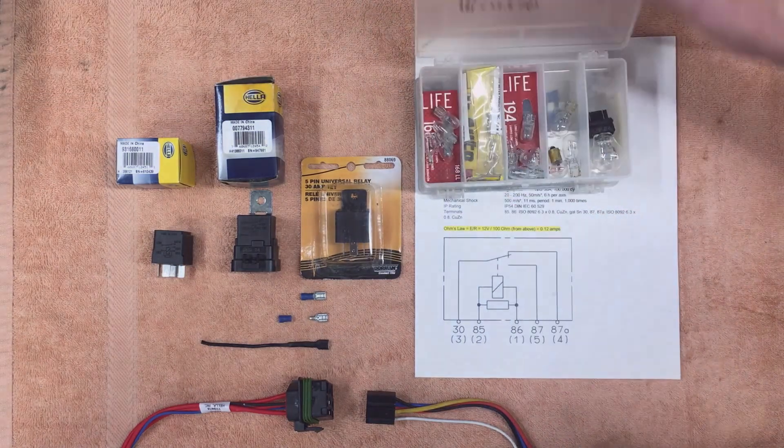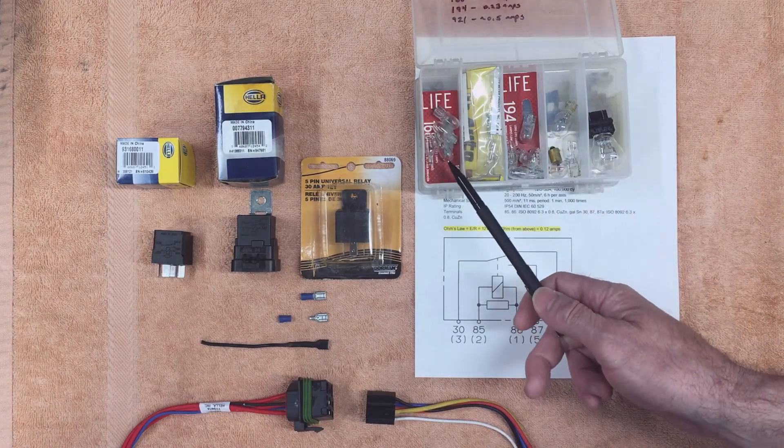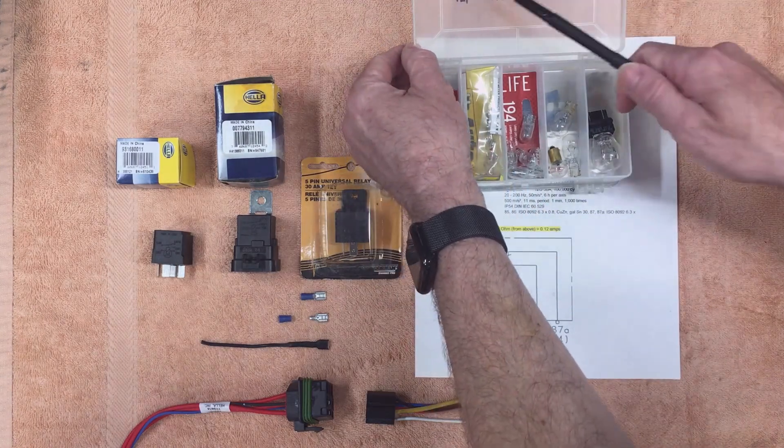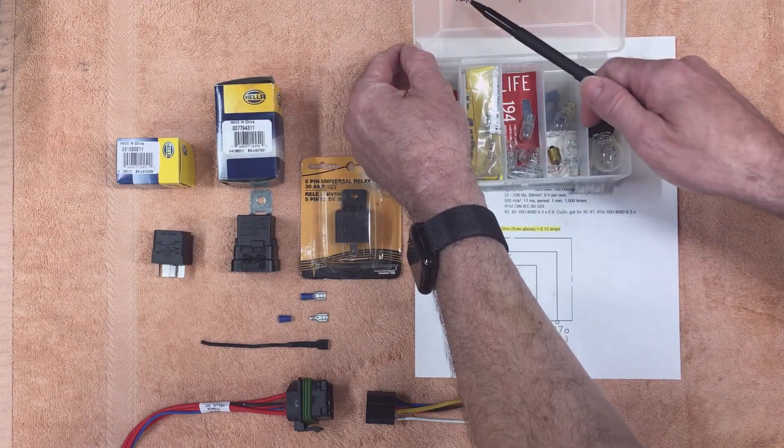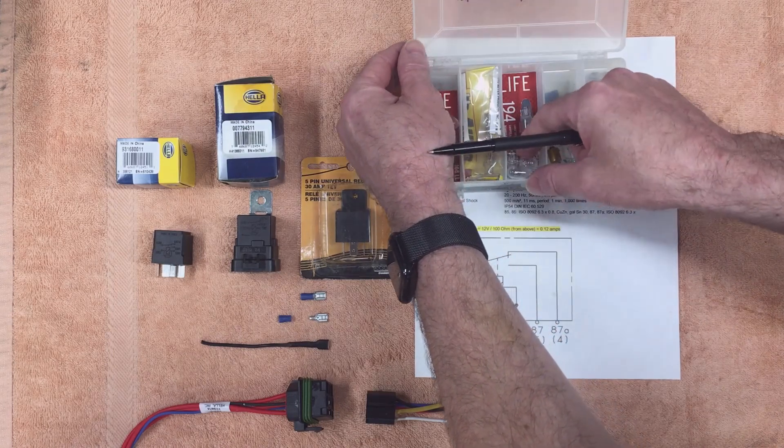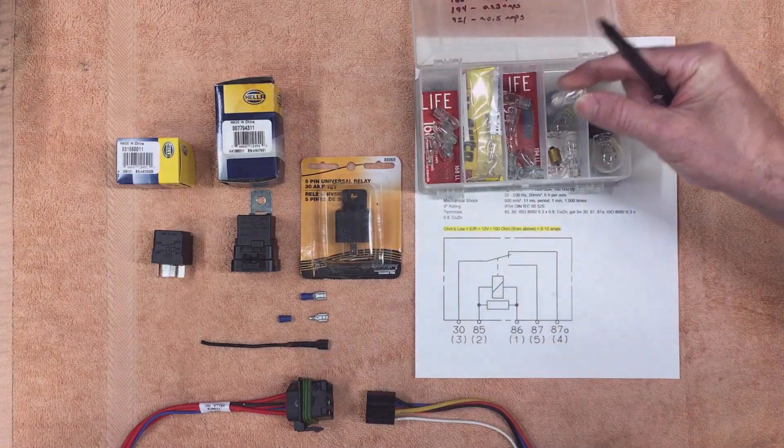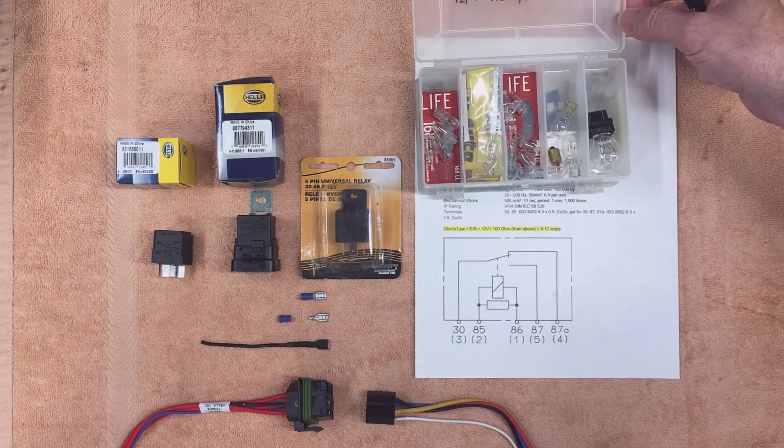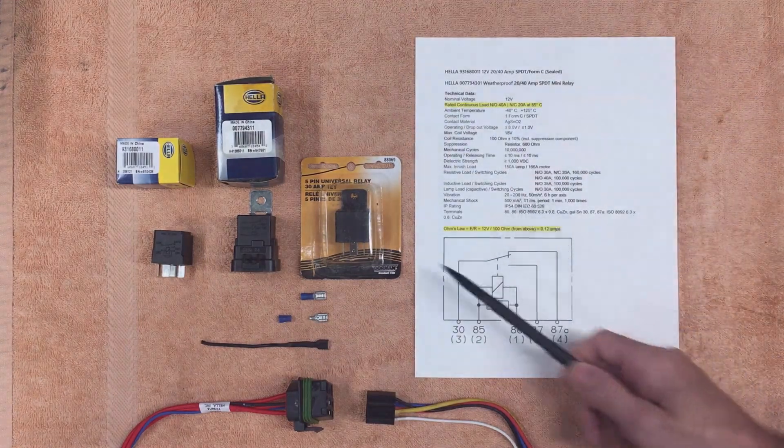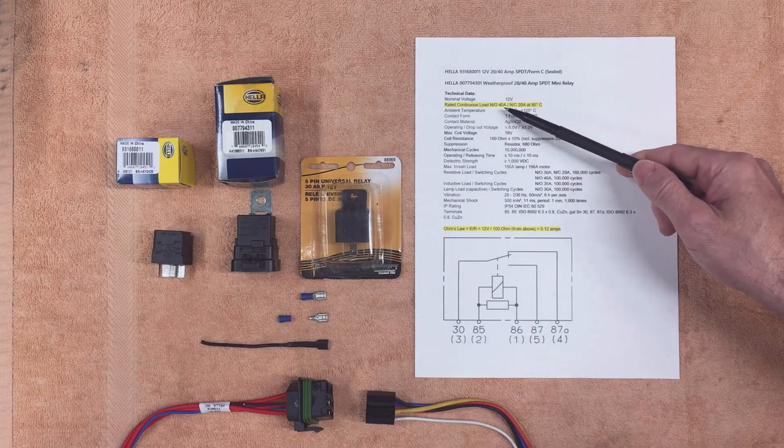Now by comparison, I'm going to pull out my little spare bulbs box. A 168 bulb requires 0.3 amps and a 194 lamp, these little guys that illuminate the dash or the side marker lamps, require 0.3 amps. So about twice the load that this little relay puts on, and you can have a circuit that supplies 40 amps of power.